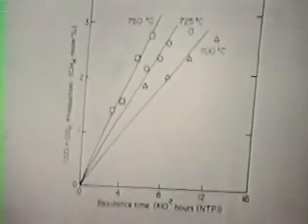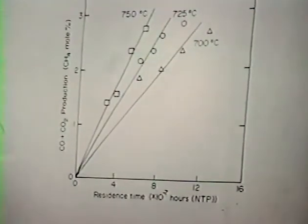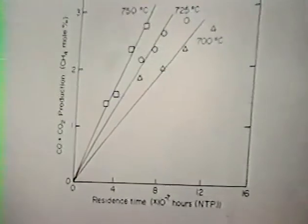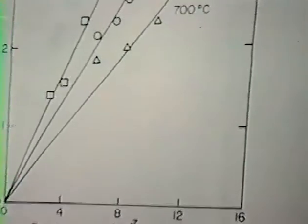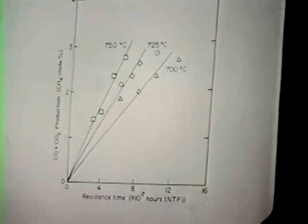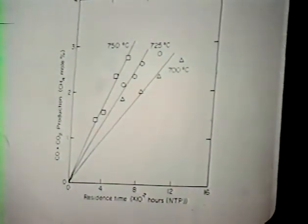Then this next overhead, we are showing the CO and CO2 production rate versus residence time. And again, we obtain straight lines, different temperatures. So if you take the CO plus CO2 together, that's a primary product of oxidative coupling, or a primary product of the reaction at low conversions.